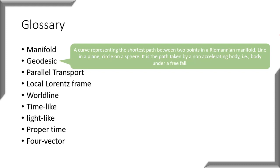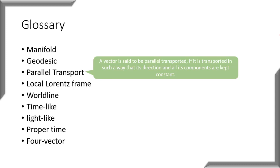We have also defined a geodesic. A geodesic is a curve representing the shortest path between two points on a Riemannian manifold. A geodesic on a plane is a line; on a sphere it is a circle. It is a path taken by a non-accelerating body — a body under free fall in a Riemannian manifold will always take a path called a geodesic.